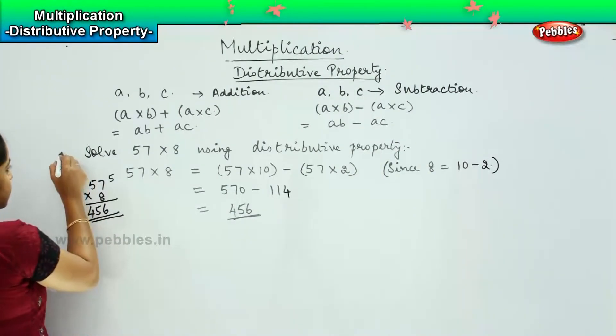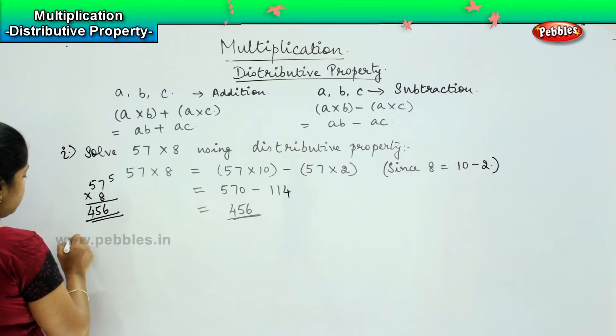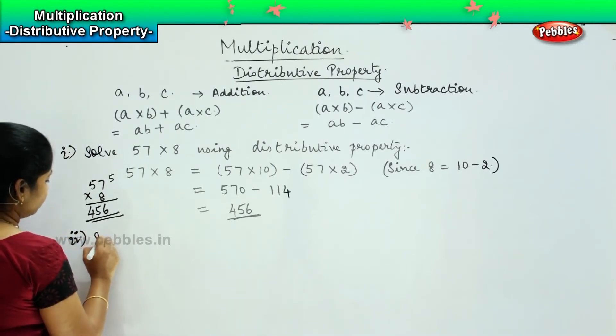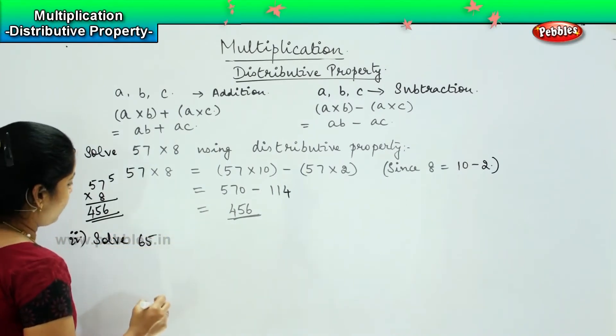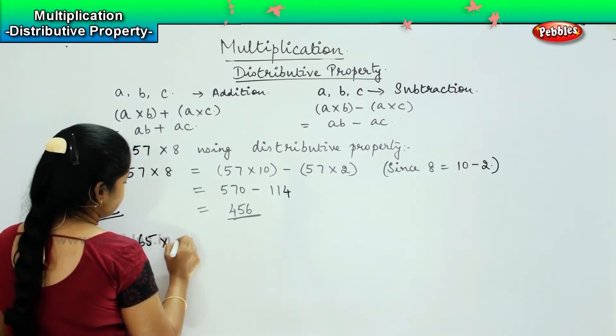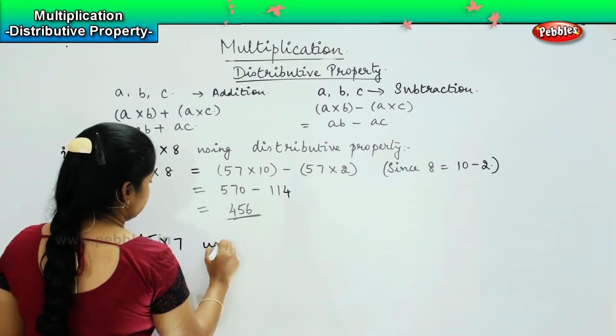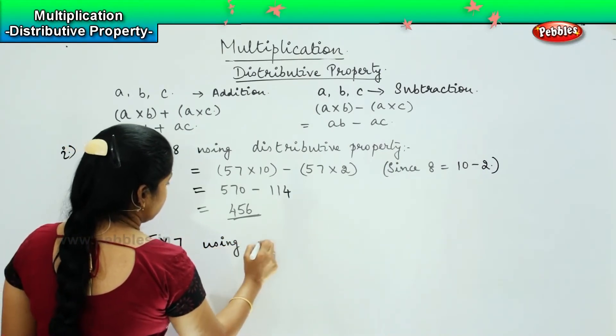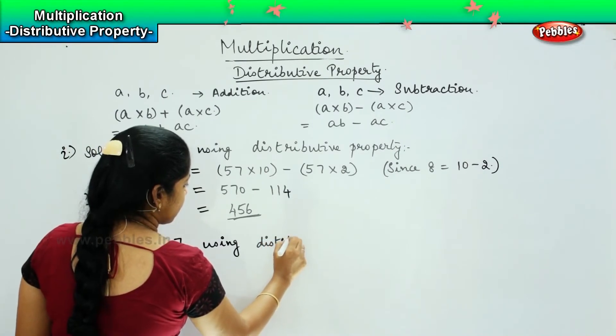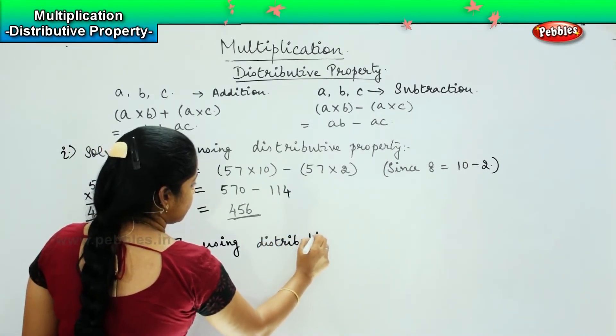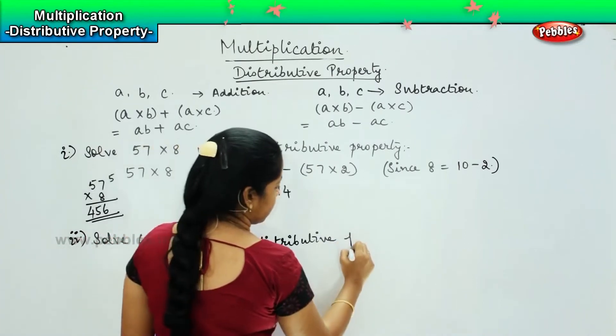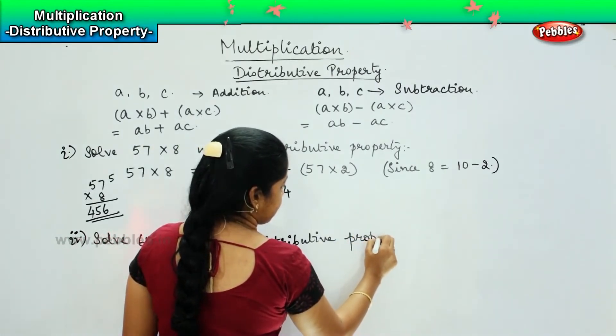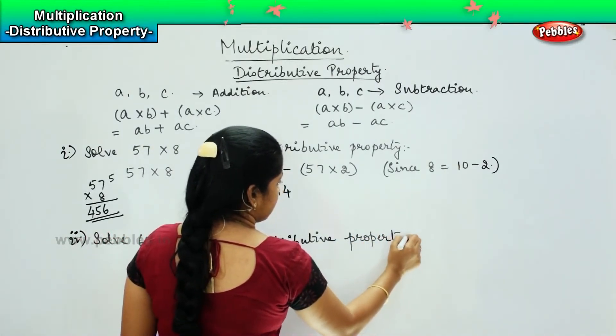Let us try to do one more. So, this was my question 1. Say, question 2, I say: solve 65 into 7 using distributive property.